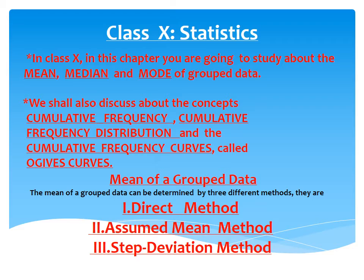The mean of ungrouped data can be determined by three different methods. They are: the direct method, the assumed mean method, and the step deviation method. We are going to see about these three methods one by one clearly in the upcoming slides.